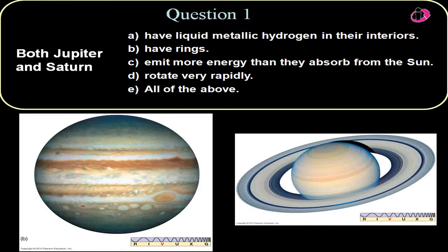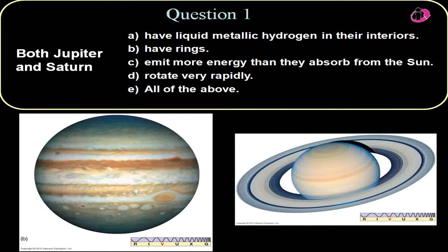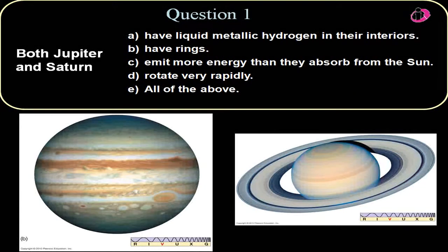Here's question number one. Both Jupiter and Saturn: A, have liquid metallic hydrogen in their interiors. B, have rings. C, emit more energy than they absorb from the sun. D, rotate very rapidly.